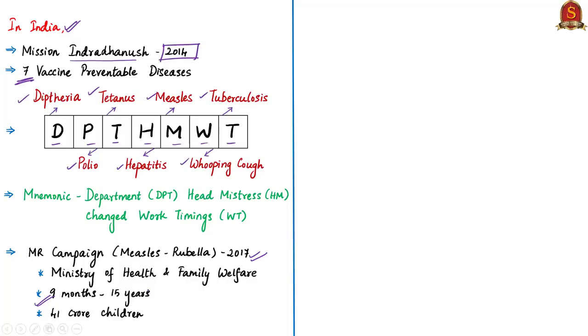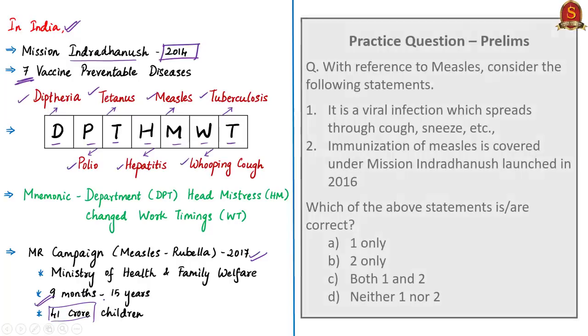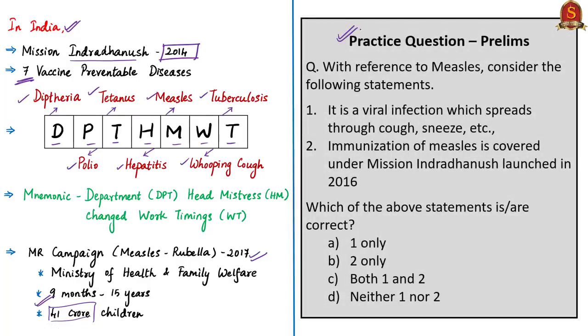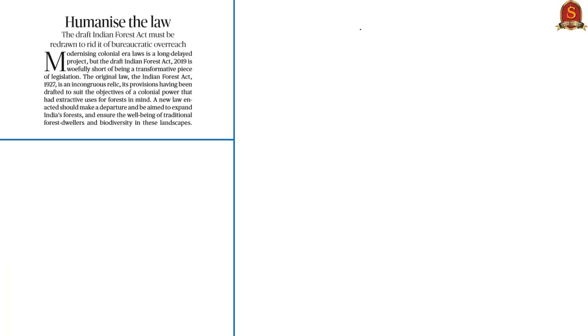This campaign aims to cover approximately 41 crore children. With this, we come to the end of this topic. The displayed prelims question will be discussed in the last session.